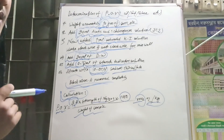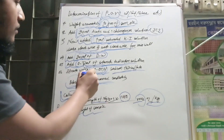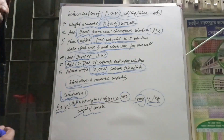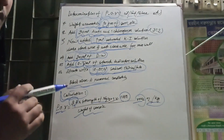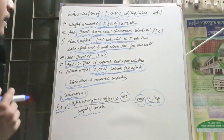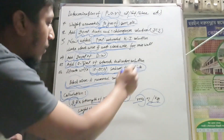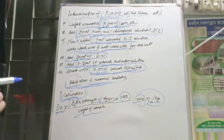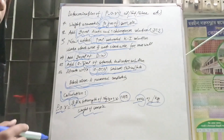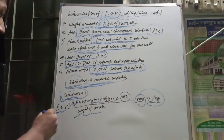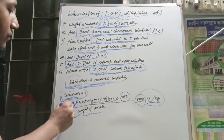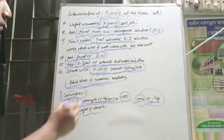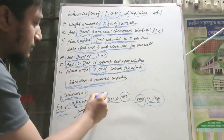Then we start the titration. We use titration with normal sodium thiosulfate solution. The titration is carried out until the color is removed completely. The titration volume, multiplied by the normality of sodium thiosulfate, is 0.01.